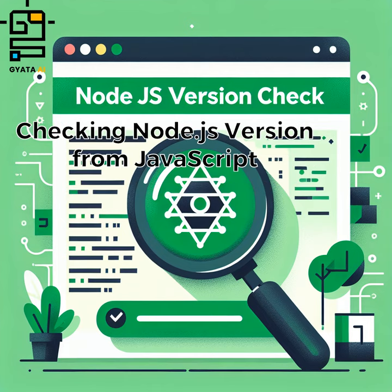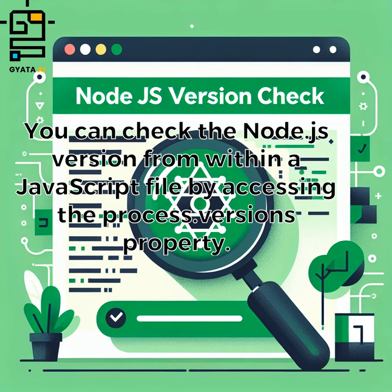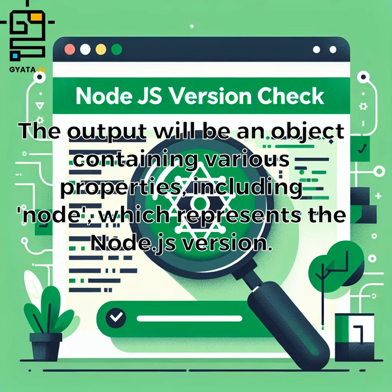Checking Node.js version from JavaScript? You can check the Node.js version from within a JavaScript file by accessing the process.versions property. The output will be an object containing various properties, including node, which represents the Node.js version.